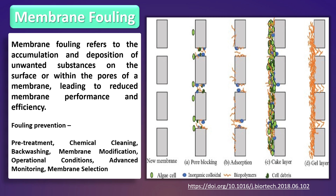To mitigate membrane fouling, various strategies are employed. Like pre-treatment: implementing effective pre-treatment processes such as coagulation, flocculation, sedimentation and microfiltration can help remove larger particles and organic matter before they reach the membrane.